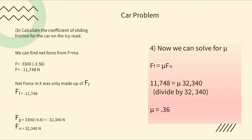Quick check: 0.36 is between 0 and 1, it's a decimal, there are no units, and it's not negative. What seems like a very complex problem is manageable as long as you write down all variables and determine what each sub-question needs before moving forward. This was one of the trickier homework problems — you may see something like it on a quiz or test. Thank you and have a great day.